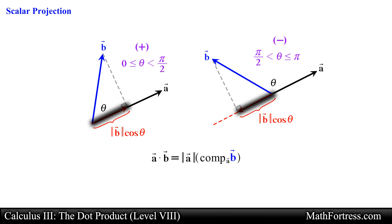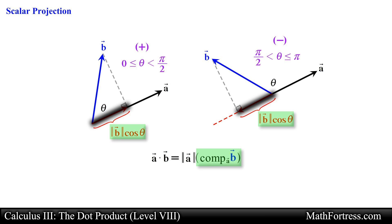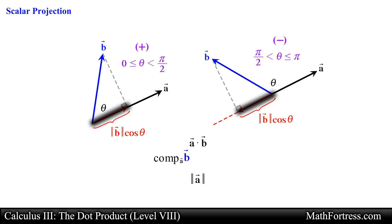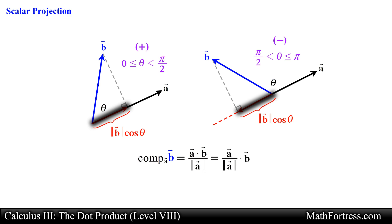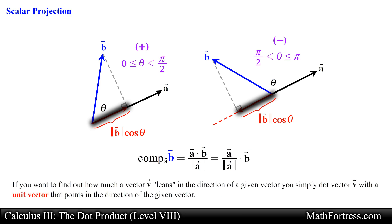The geometric definition of the dot product also provides a simple way of calculating the scalar projection of one vector in the direction of another. We know the scalar projection equals the magnitude of vector b times cosine of theta, so we solve for this quantity to obtain a formula. The component of vector b along vector a can be computed by taking the dot product of vector b with the unit vector in the direction of vector a. In other words, to find how much a vector v leans in a given direction, simply dot v with the unit vector pointing in that direction.